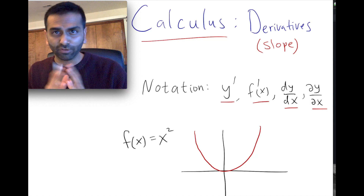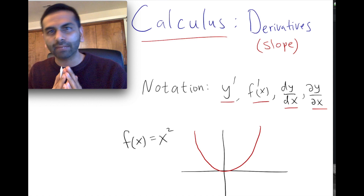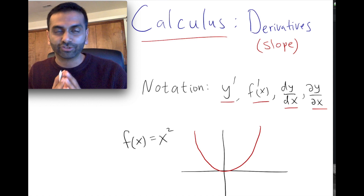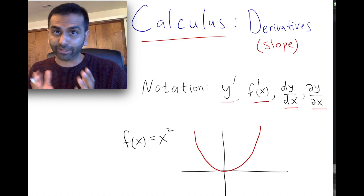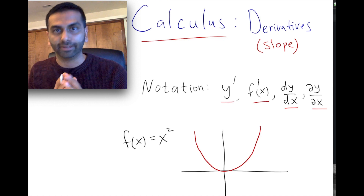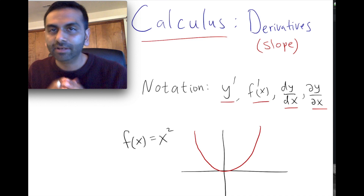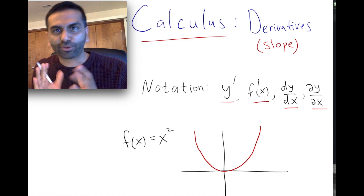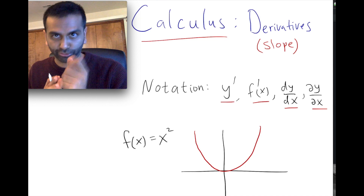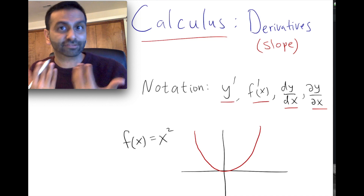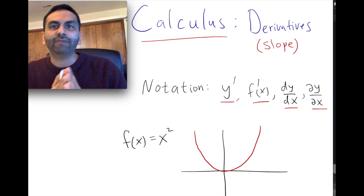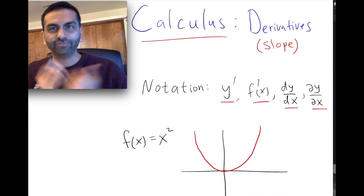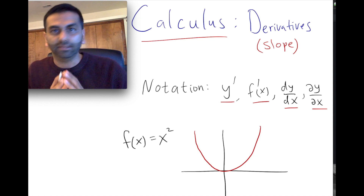In layman's terms, you can think about the derivative of a function as the slope of that function. For a line, it's pretty straightforward. If you have an mx plus b equation, it's just the m. So if a line was 3x plus 4, the 3 is the slope, and you're done, no matter where you're looking on that function.